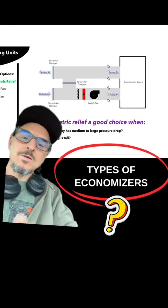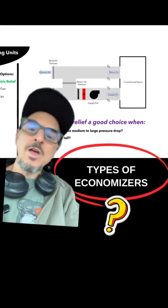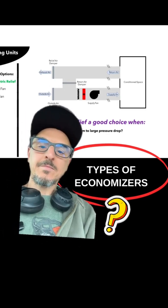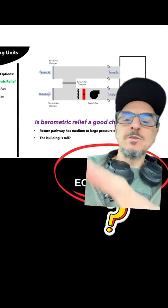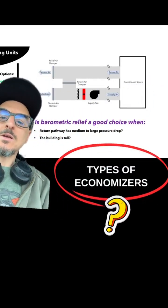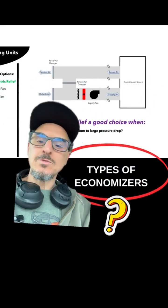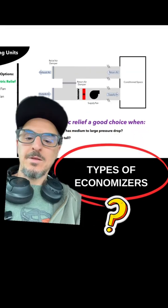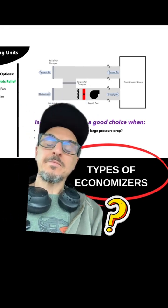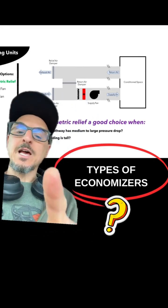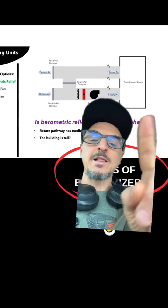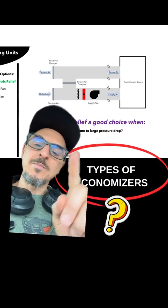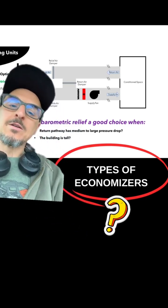In this video, we're going to delve into three different types of economizers. An economizer cycle brings in outdoor air when the conditions are right to use the outside air to cool your heat load in the conditioned space. For example, if it was 55 degrees out today and you were in an office building with a lot of interior load, you would open up your outside air damper, turn off your mechanical cooling, and use that air to cool the space.